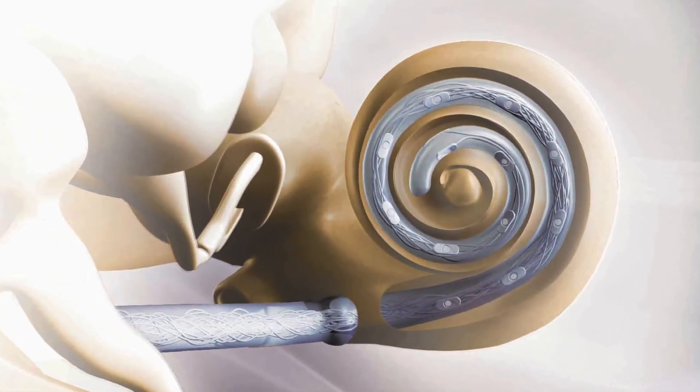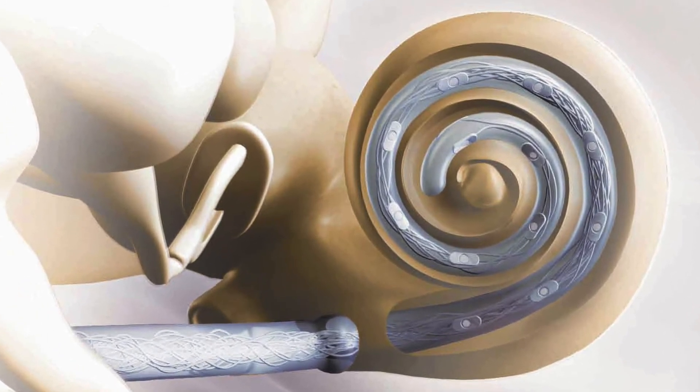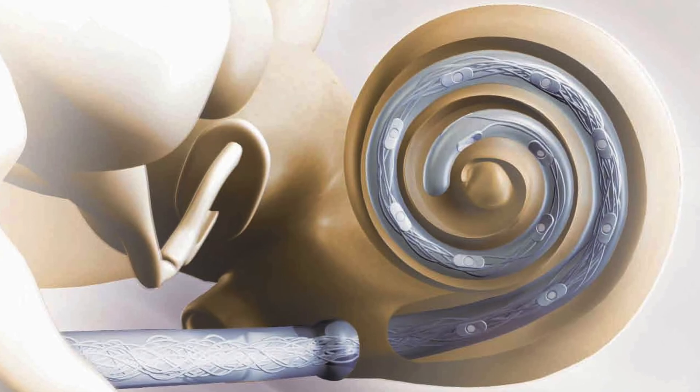Therefore, different length electrodes will provide different distortions to pitch. You can try this out yourself. Take a listen to Mozart's Eine kleine Nachtmusik as it would be presented to three different cochlear implant users with different electrode lengths and positions.